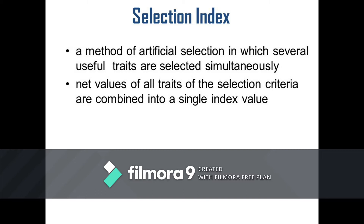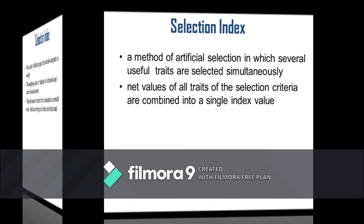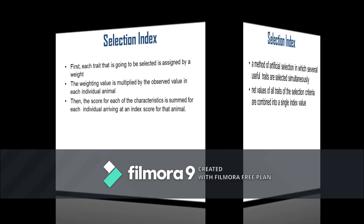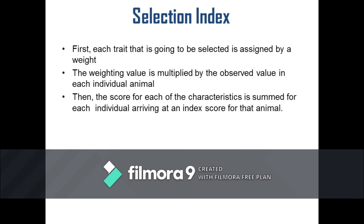Selection is then based on the ranking of individuals according to index value. In doing the index selection method, each trait that is going to be selected is assigned a weight. The weight given to each trait depends on the perceived importance of the trait. The weighting value is multiplied by the observed value in each individual animal.